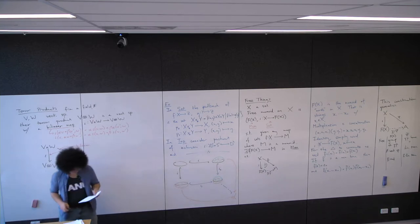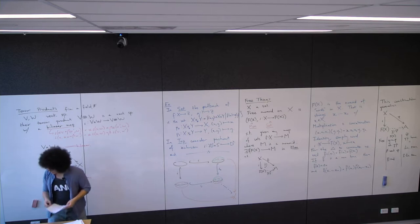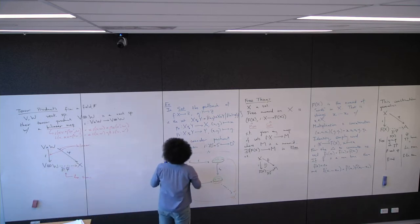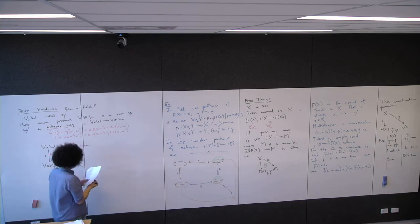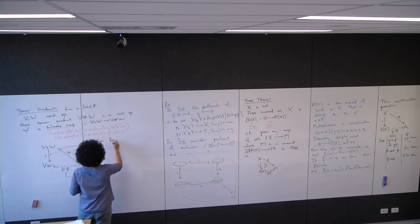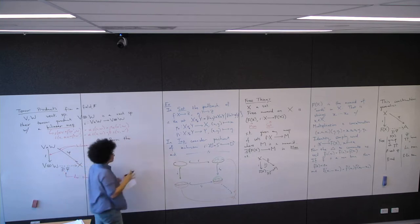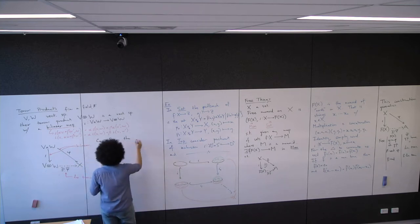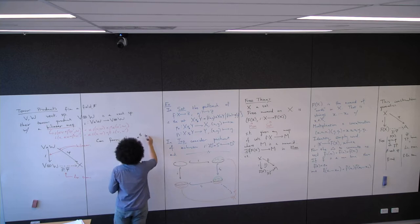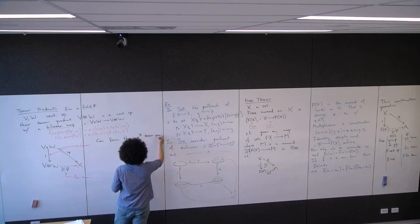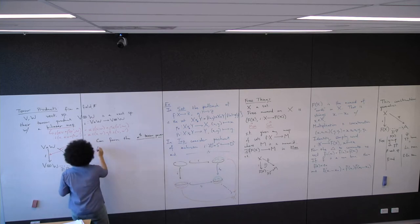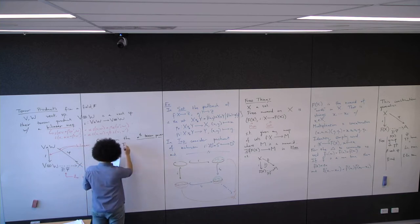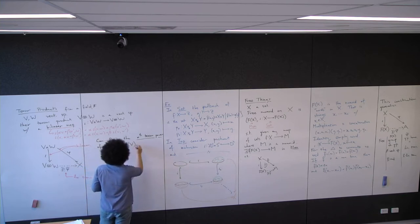We can hence form the nth tensor power of some vector space V, denoted T^n(V), which is V tensored with itself n times.